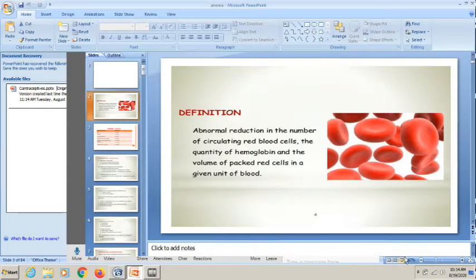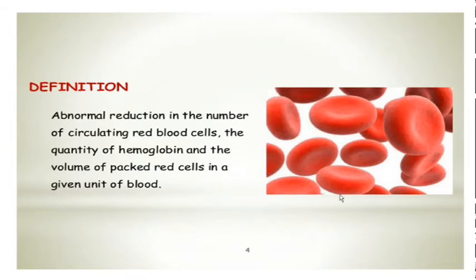Anemia is basically a very vast topic and we will try to recapitulate the salient features and the important causes of anemia in these two lectures. Definition wise, any abnormal reduction in the number of circulating RBCs, or the quantity of haemoglobin, and the volume of packed RBCs in a given unit of blood.